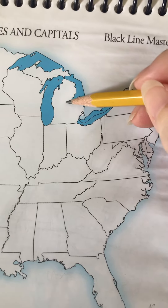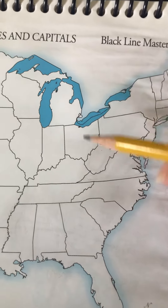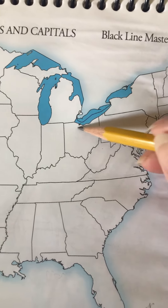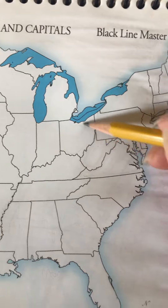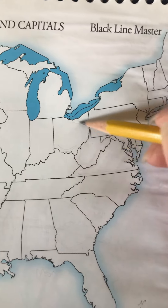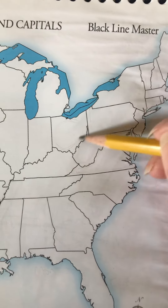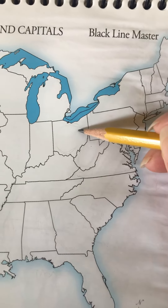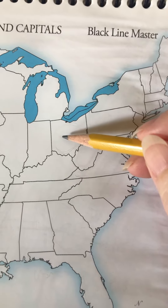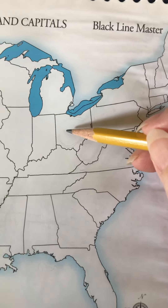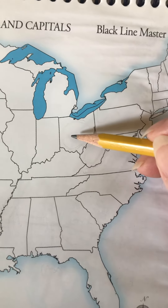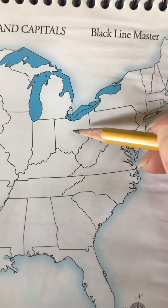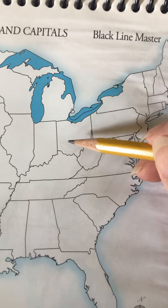Then we go to Ohio, and Ohio is kind of shaped like an O for Ohio. The capital is Columbus, so we picture Christopher Columbus saying 'Oh hi' — Columbus is saying Ohio, 'Oh hi.'